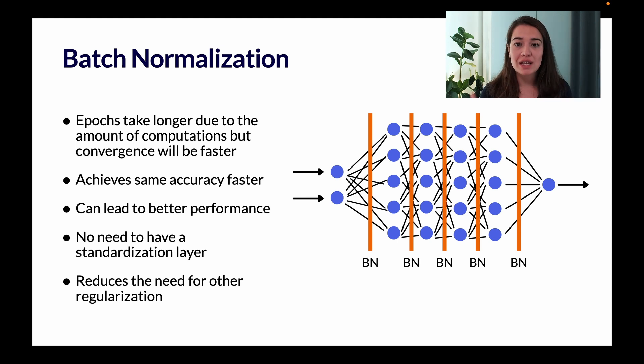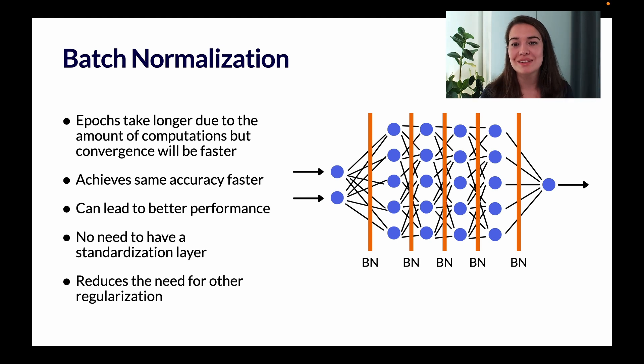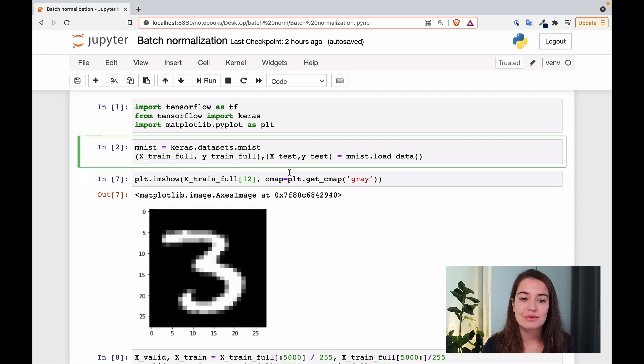I will show you how it works using the MNIST dataset, a really classic example of handwritten digits. Here, I'm just importing the libraries that I need and the datasets from Keras. And this is what the data points look like.